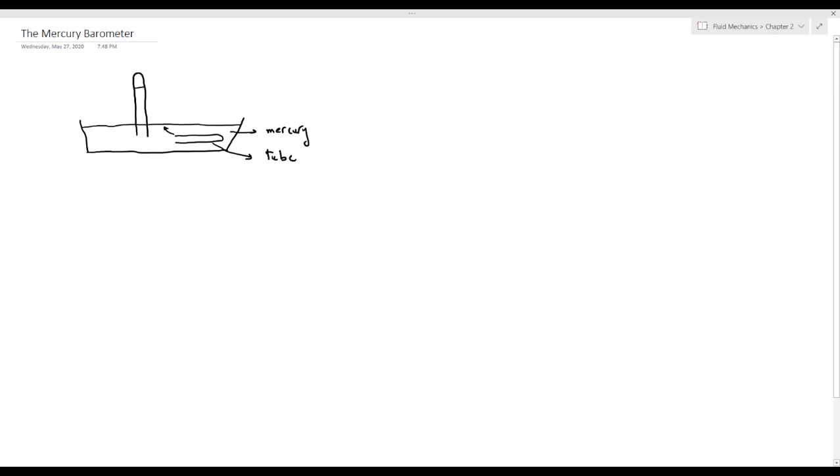enters this tube and reaches a level equal to H. Above the mercury inside the tube we have mercury vapor which has a vapor pressure which is approximately negligible.